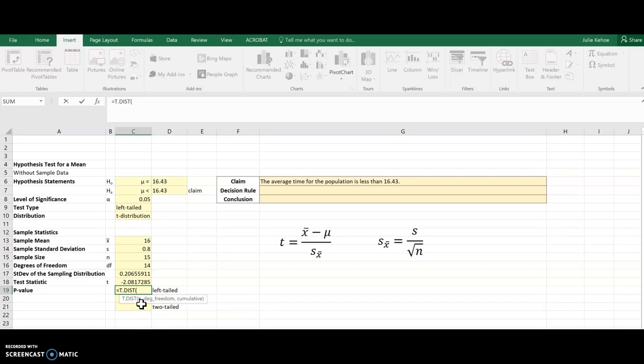It needs x, which is the test statistic I just calculated. And degrees of freedom, we've got up there. And then we always want cumulative because we want the area for everything to the left. And there is my p-value for a left-tailed test.